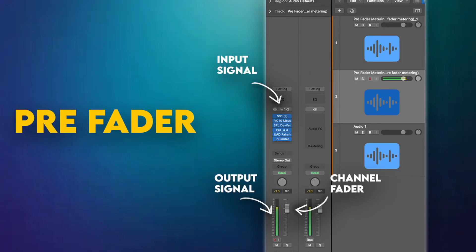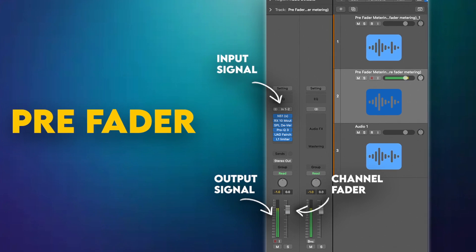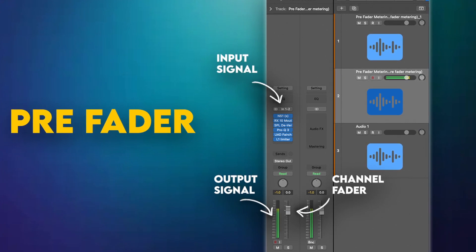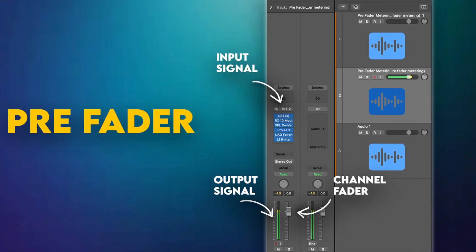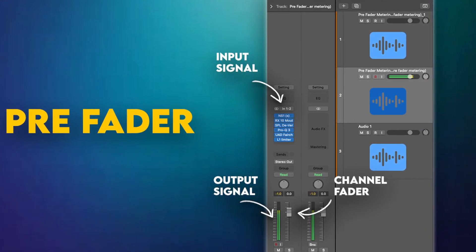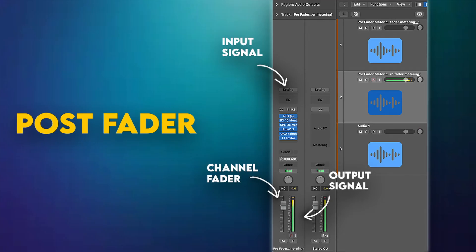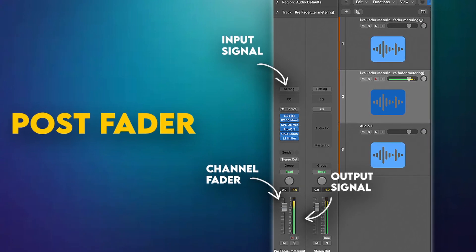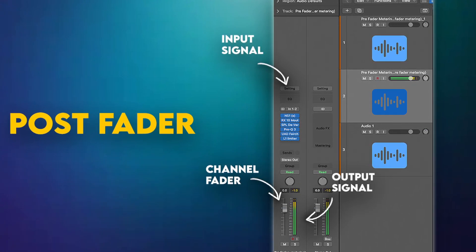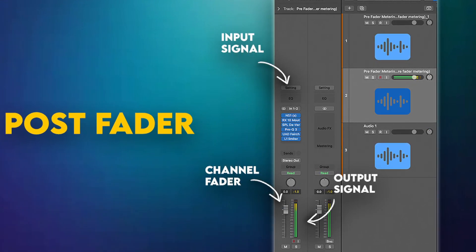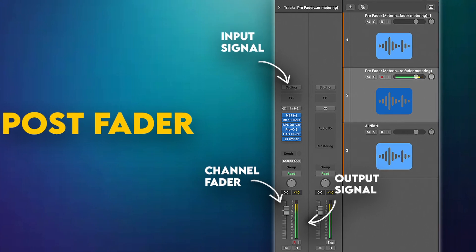What is pre-fader metering? Pre-fader metering is signal that gets to your plugins before the fader. So all the signal coming down into your channel fader has to pass through all your plugins first before you can make changes to the gain or volume of the sound.